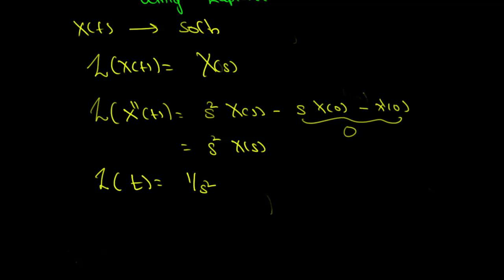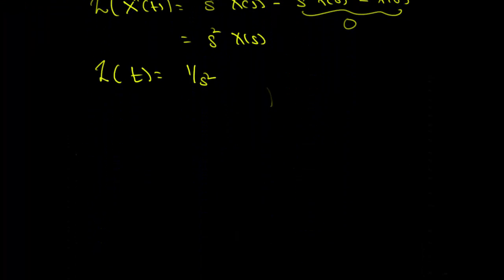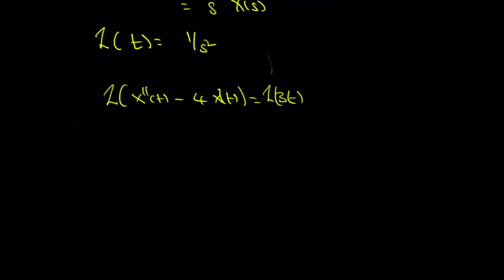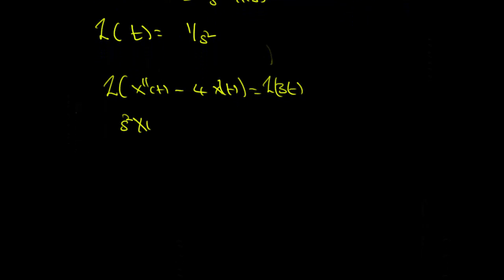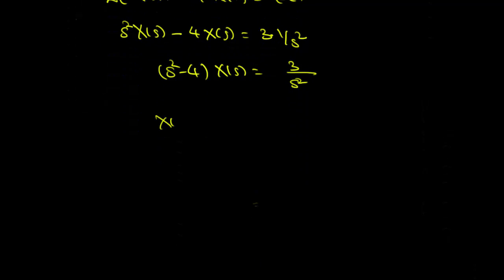Using these results and the equation x double prime minus 4x equal to 3t, we have the Laplace transform of x double prime of t minus 4 times x of t equals the Laplace transform of 3t. Since the Laplace transform is linear, we have s squared X of s minus 4 times X of s equals 3 times 1 over s squared. So s squared minus 4 times X of s equals 3 over s squared, which means X of s equals 3 over s squared times s squared minus 4.